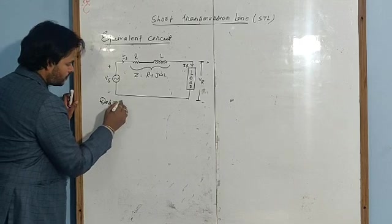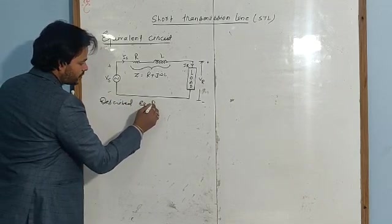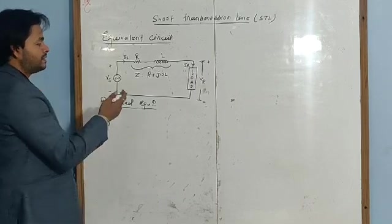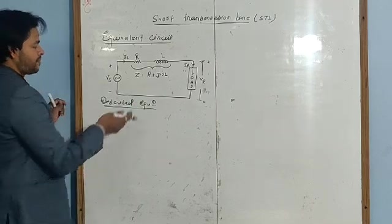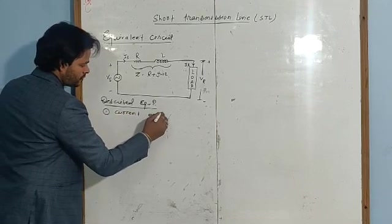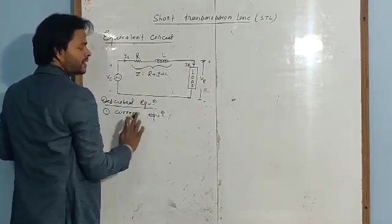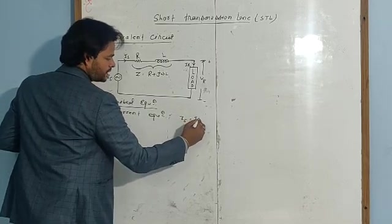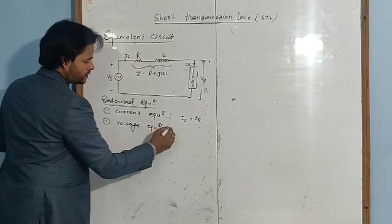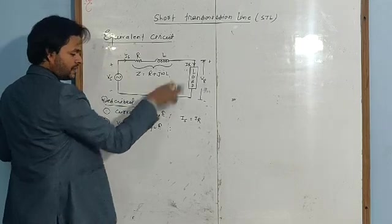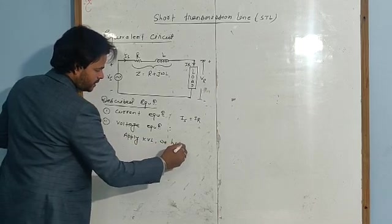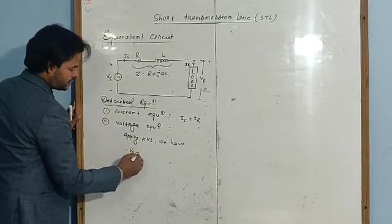Now describe the equations. Students, this is just a network. If you know the network, solve it. Now, the first equation: the current equation. Of course, Is is equal to IR — the sending end current equals the receiving end current.